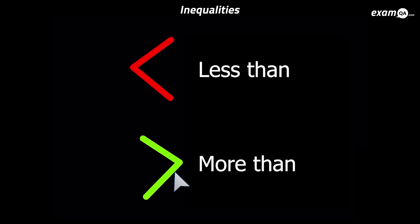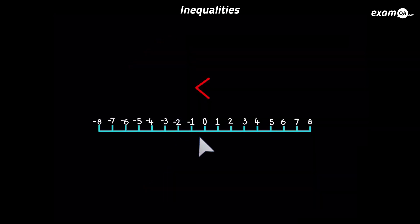We need to get used to seeing these signs and know which one is which. To begin with, students sometimes mix them up. So how are we going to remember which one is which? The less than sign is pointing to the left of the number line.